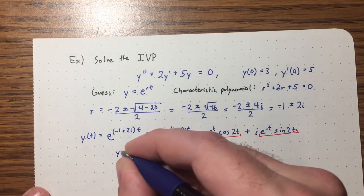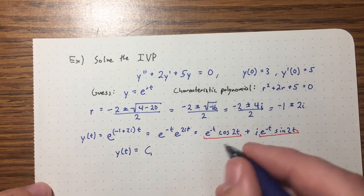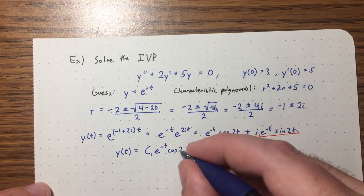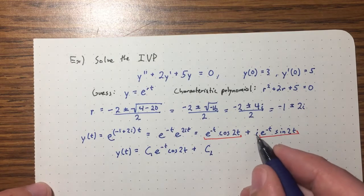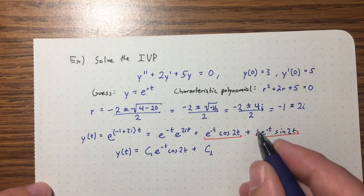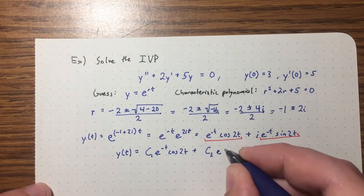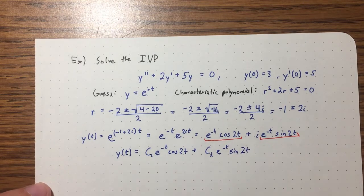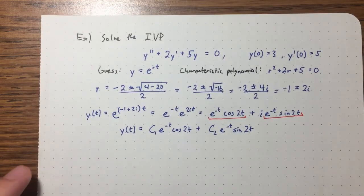So I can immediately write down the general solution. It's c1 times e^(−t)cos(2t) plus c2 times e^(−t)sin(2t). Notice I don't put the i in — I just want the imaginary part, and the imaginary part does not include the i; it's just what's multiplied by i. This is the general solution, and everything is real — there's nothing imaginary about it.